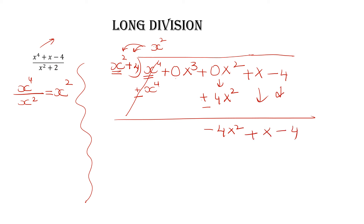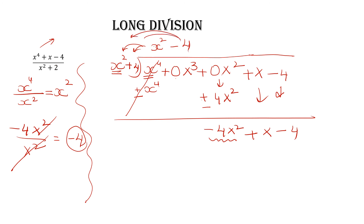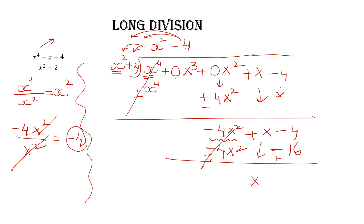Repeat all the steps: divide the first term of the new dividend by the first term of the divisor. -4x² divided by x² — x² and x² cancel — you get -4. Write -4 in the quotient. Multiply -4 by the divisor one by one: -4 times x² gives -4x²; -4 times 4 gives -16. Change the sign. -4x² and +4x² cancel. Write down x as it is, and -4 plus 16 gives you +12.